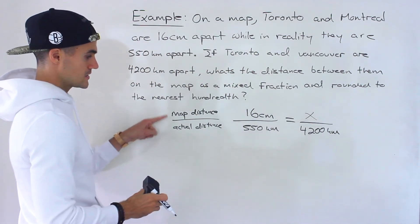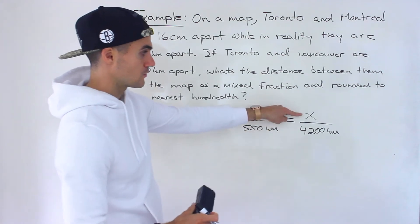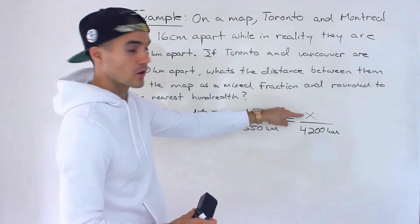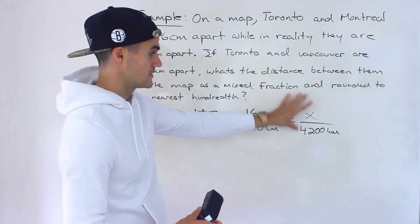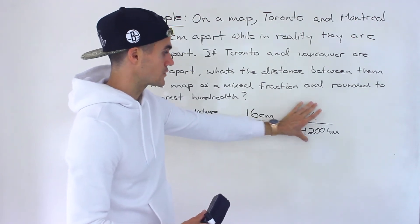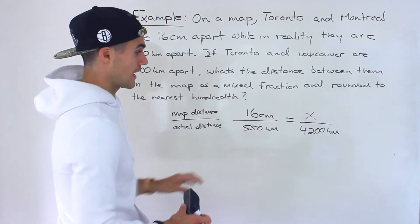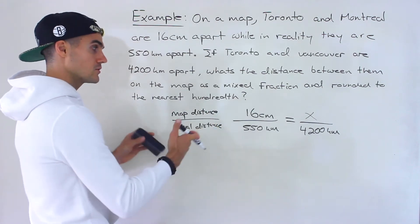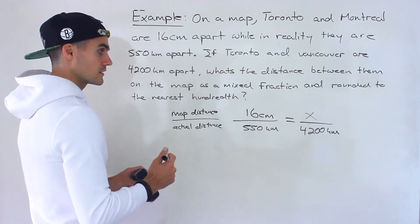So the map distance to the actual distance. So we're solving for the distance between Toronto and Vancouver on the map here. And this ratio or this fraction has to be the same as that right there. And so what we could do is cross multiply to solve here.